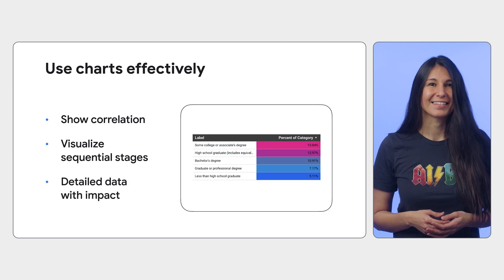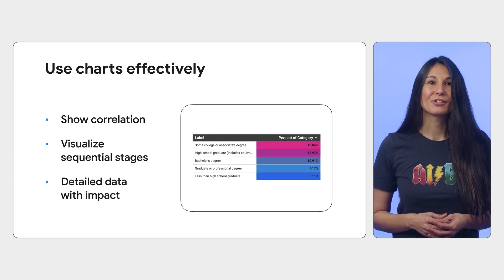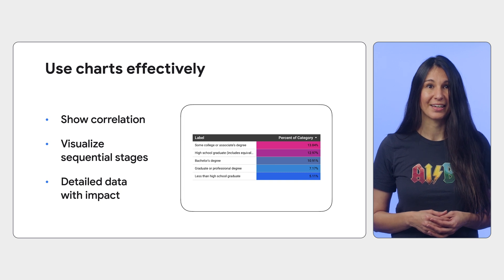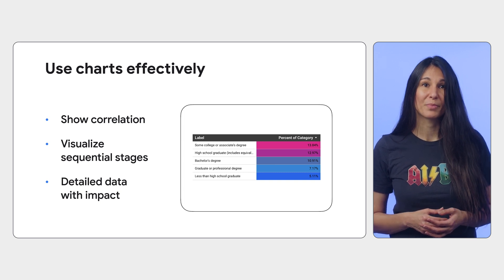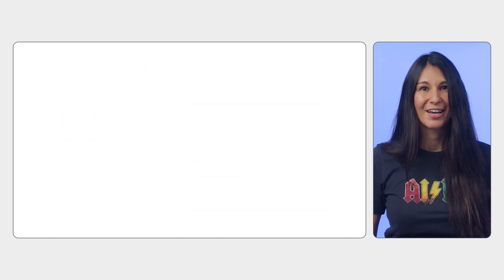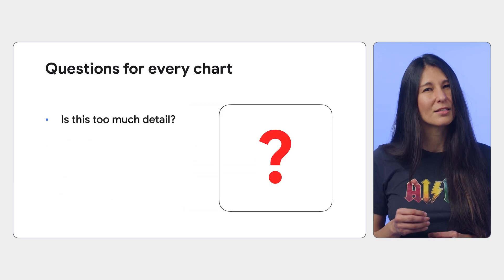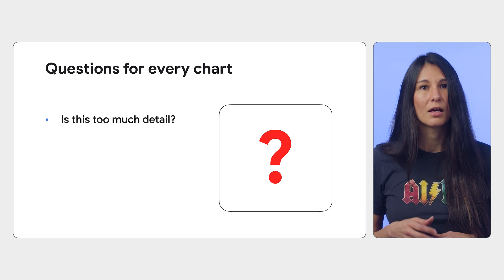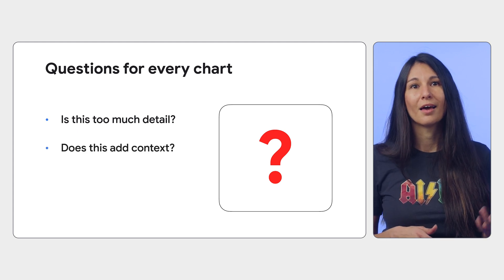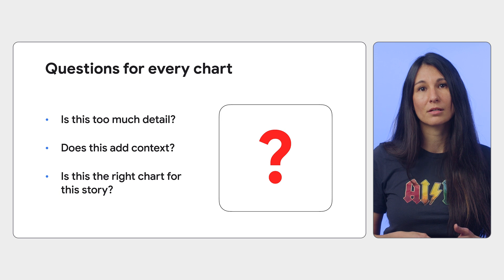Tables are excellent for displaying detailed data in a structured manner. Use conditional formatting to highlight data points that meet certain criteria — such as top-performing campaigns or areas of concern — making the data more engaging and insightful. For every chart, ask: is this too much detail for my audience? Does this visualization add context to the report? And is this the appropriate chart to showcase this data for this story?